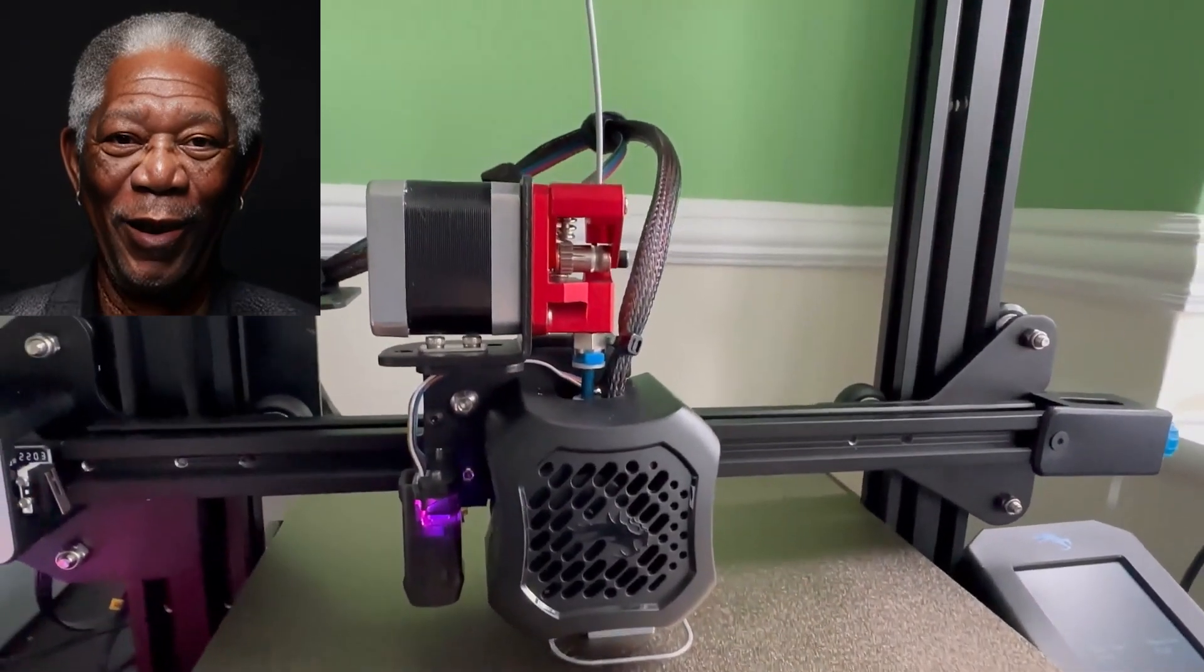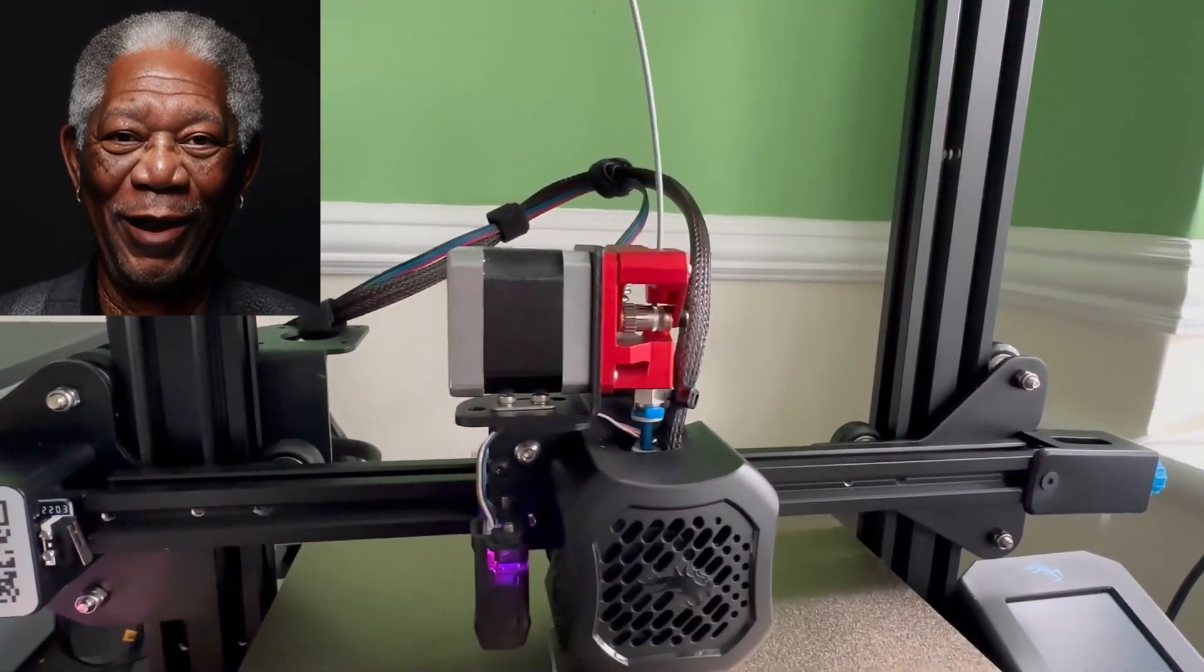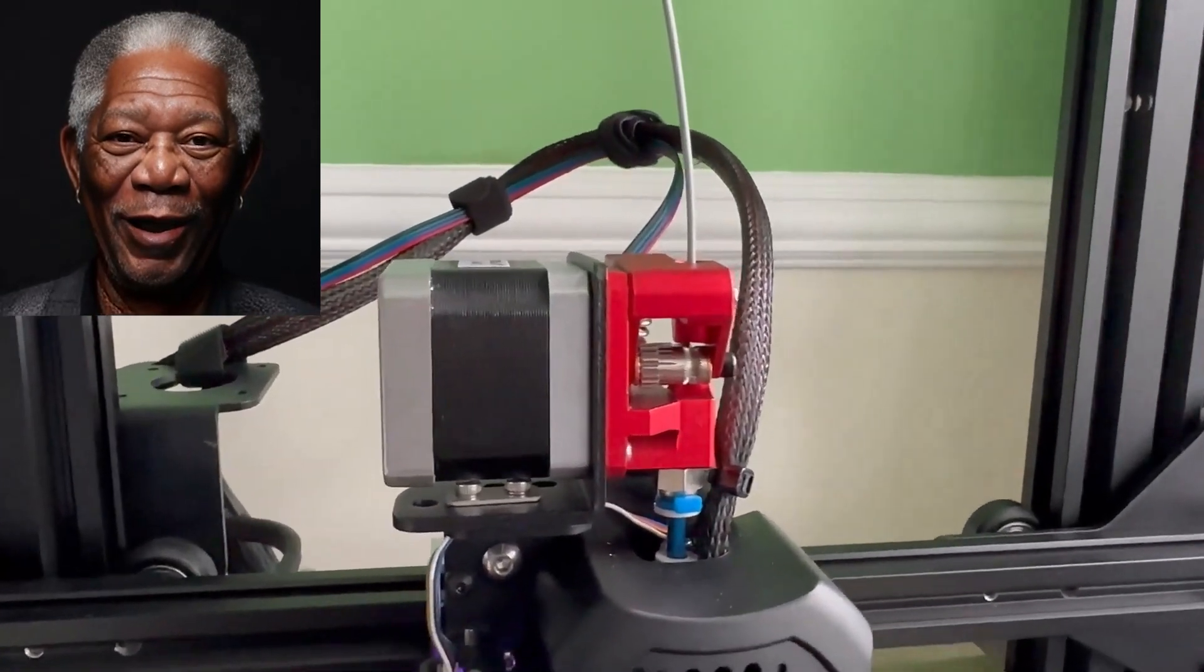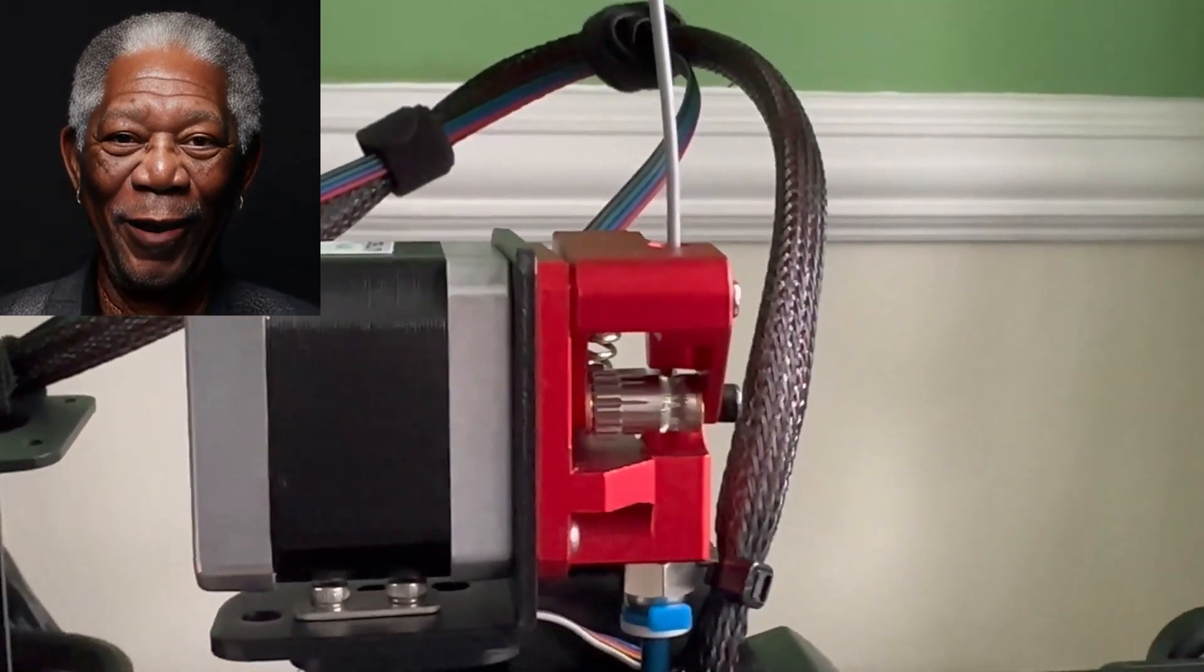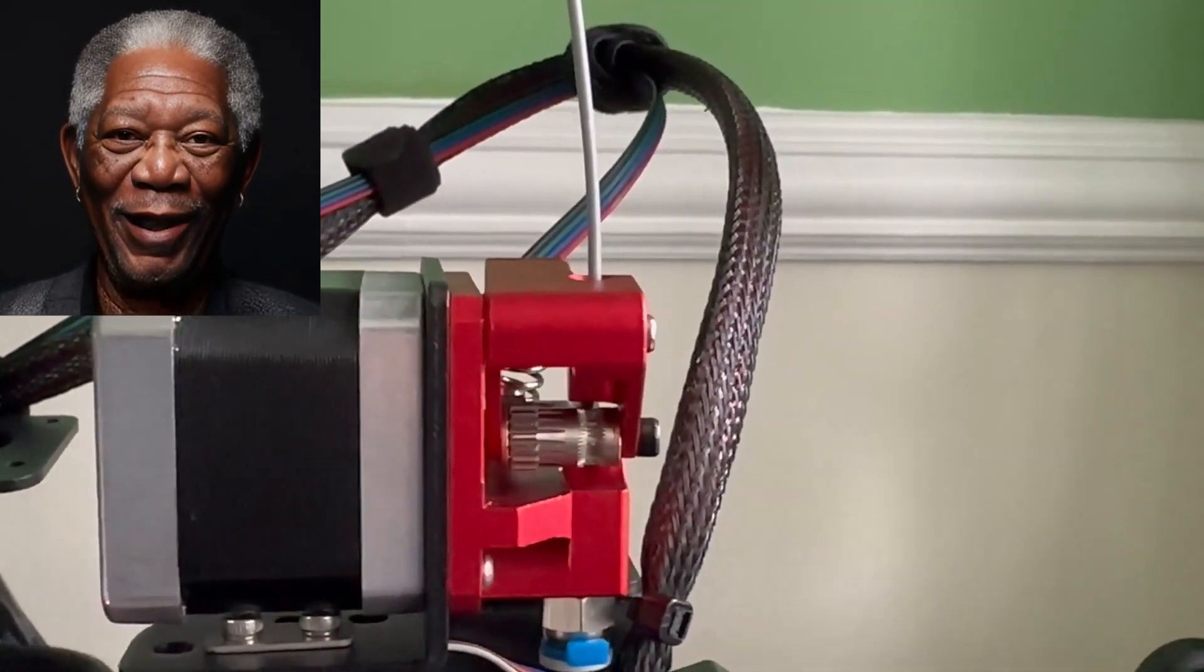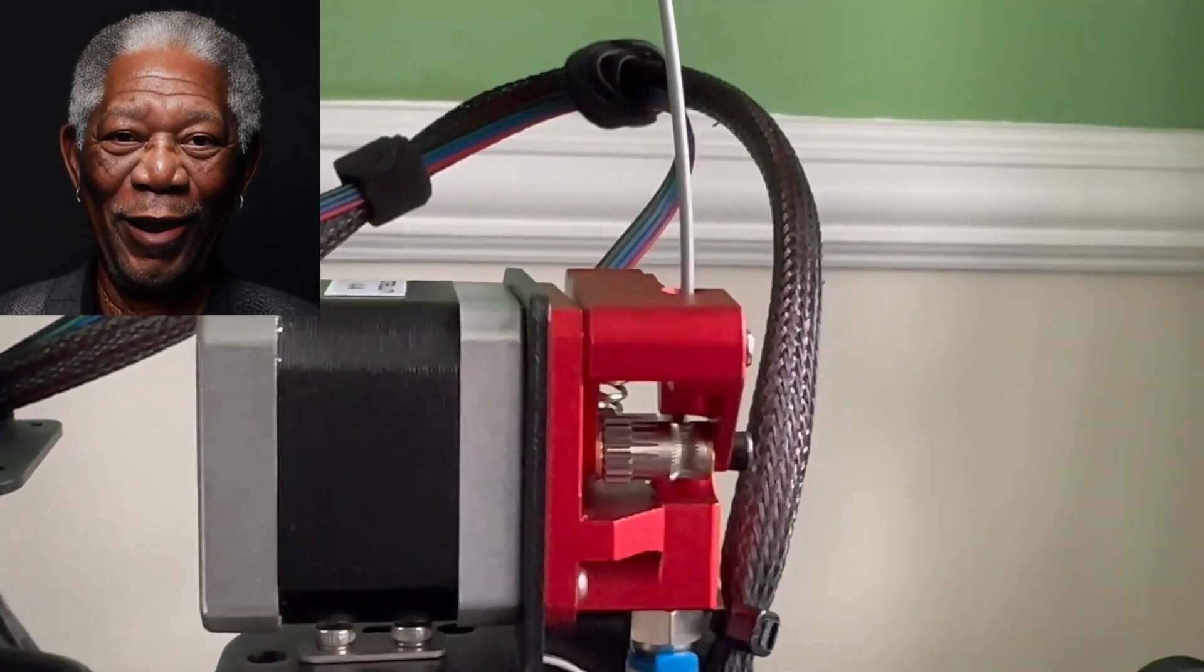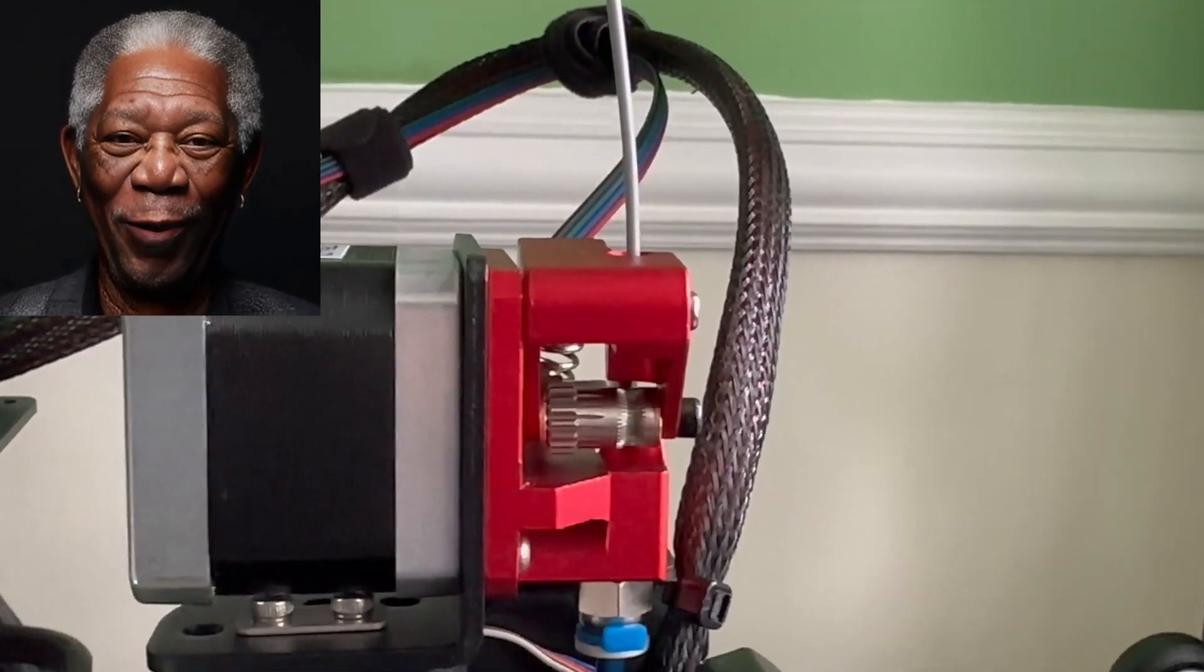Number 11: Powerful direct drive upgrade. Now let's unlock the ability to print flexible filaments with ease. The direct drive upgrade provides a shorter filament path, reducing the chances of filament tangling and allowing you to print materials like TPU and TPE. With direct drive, you'll enjoy better control over flexible filaments, leading to cleaner and more consistent prints. This upgrade is ideal for creating functional and durable parts, such as phone cases, gaskets, and wearable accessories.